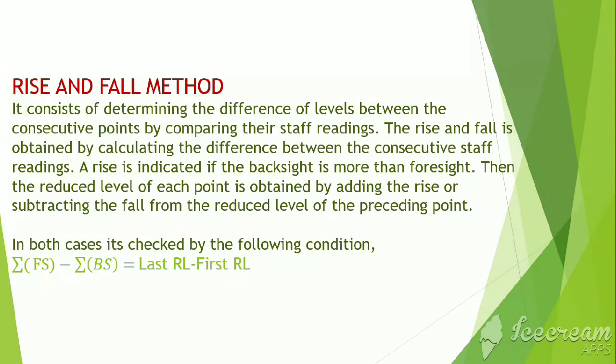In the rise and fall method, this method consists of determining the difference of levels between consecutive points by comparing their staff readings. The rise and fall is obtained by calculating the difference between consecutive staff readings. A rise is indicated if the backside is more than foresight. Then the reduced level of each point is obtained by adding the rise or subtracting the fall from the reduced level of the preceding point.